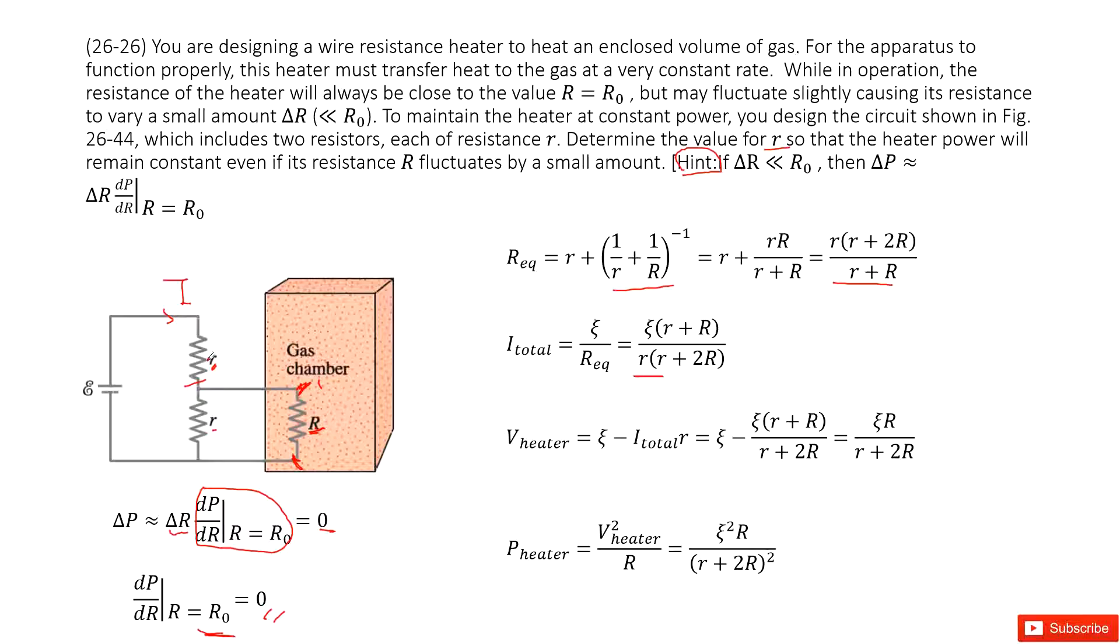Now we can get the V heater. The V heater is the voltage from these two points. That is ε minus I total times this r. And then input I total inside, we get the term like this one. So now we can see the voltage across the V heater is given. We just obtained there.